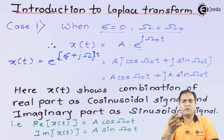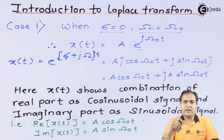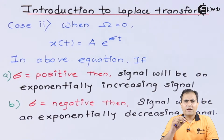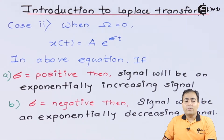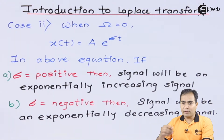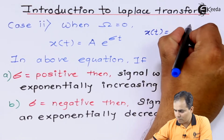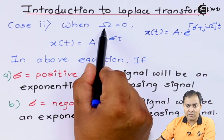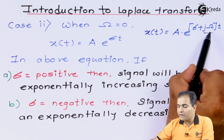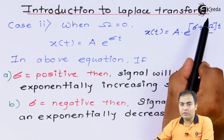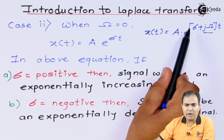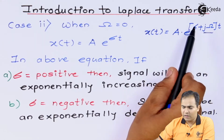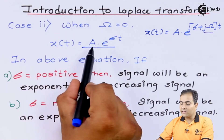Now we are going to substitute different values of sigma and omega — that will be case number 2. In the second case, we substitute the radian frequency omega equal to 0. This was the original equation. If the radian frequency omega is 0, then the imaginary part becomes 0, which means we have only a real part on the power side — the exponential has only a real power. So X(T) = A·e^(σT).